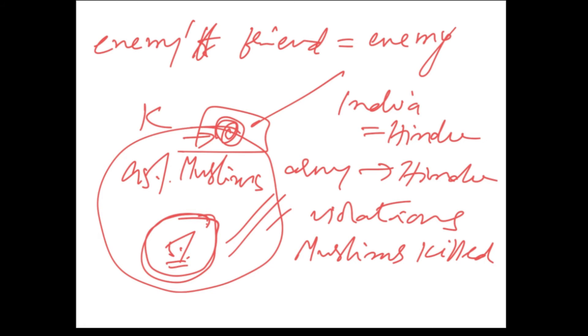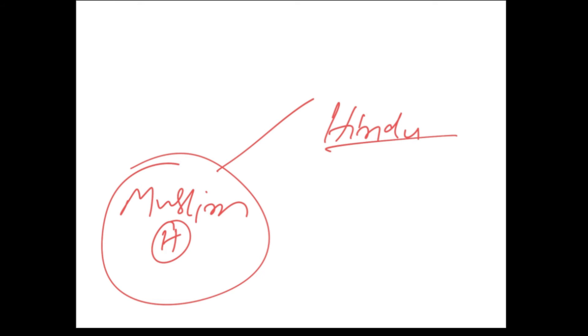So, because the situation is Hindu, Muslim, and being controlled by a Hindu. It is like this. It is a conflict here. So, Hindu will be seen as enemy's friend.